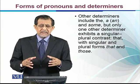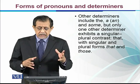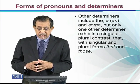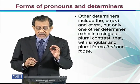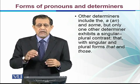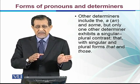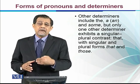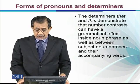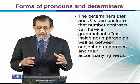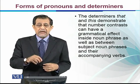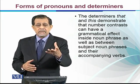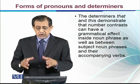Other determiners include 'a', 'an' (indefinite), and 'some', but only certain determiners exhibit a singular-plural contrast — that is, 'that' with singular or plural: 'that boy' or 'those boys'. So we can say that 'this', 'these', 'that', 'those' are the determiners which show singular and plural forms. The determiners 'this' and 'that' demonstrate that number contrast can have a grammatical effect, so if you use 'this' the noun and verb should both be singular, and if you use 'these' both should be plural.